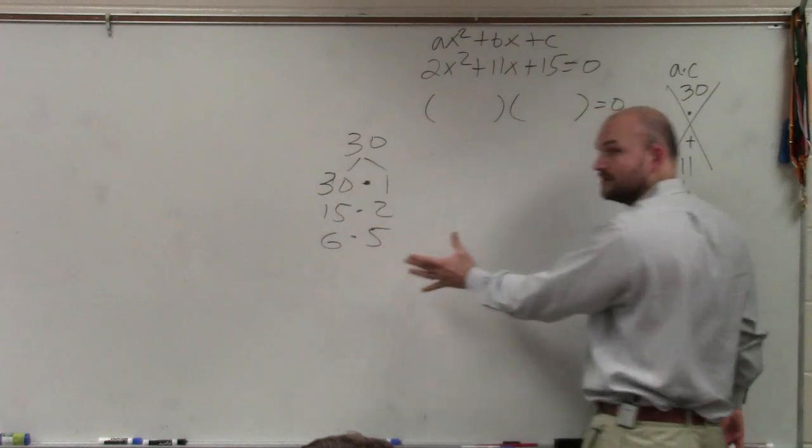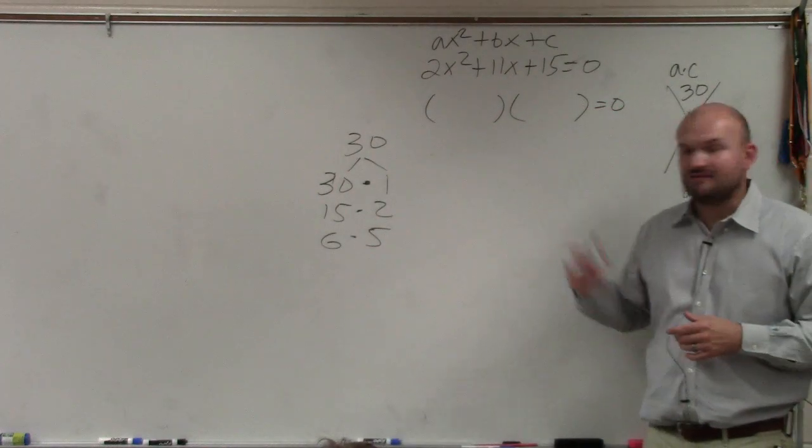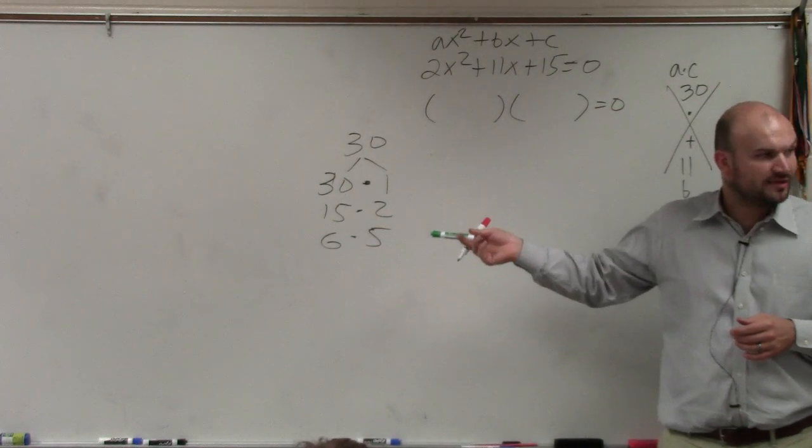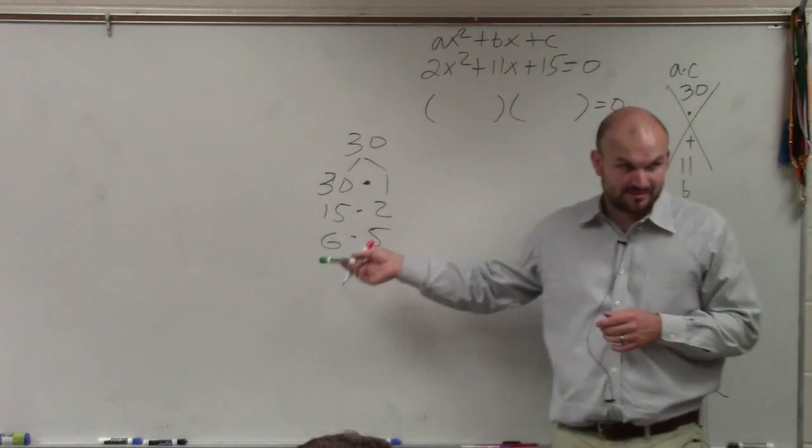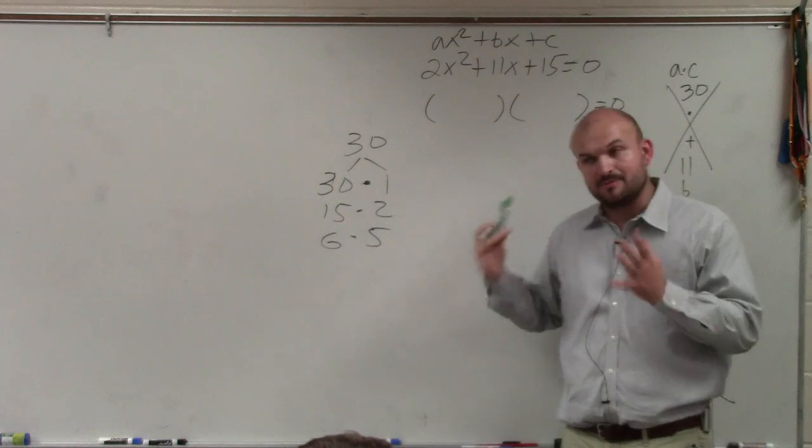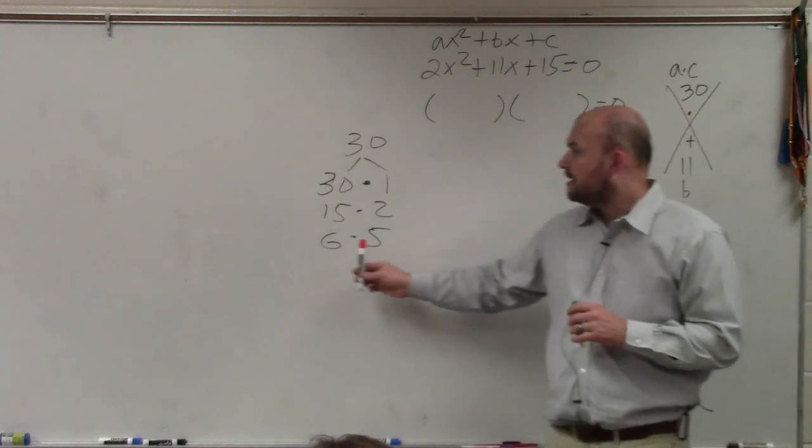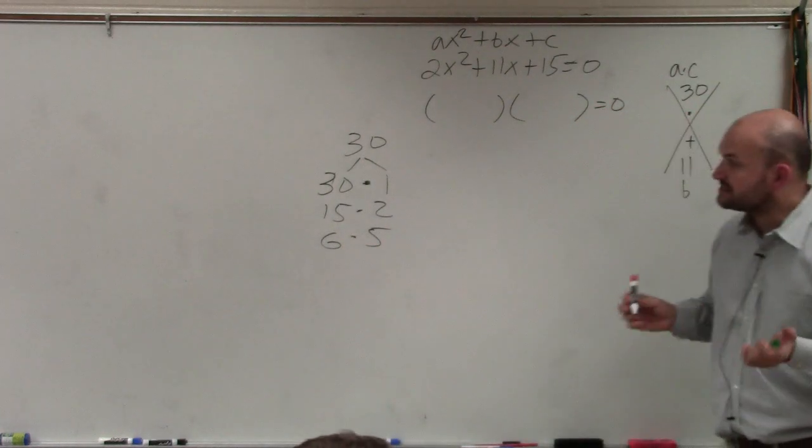Some of you might say, OK, I got all the numbers add to give you positive 11. What if I gave you negative 11? You should know that these both have to be negative. So you just got to be thinking of that case. In this case, obviously, it's going to be 6 and a 5.